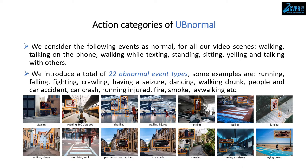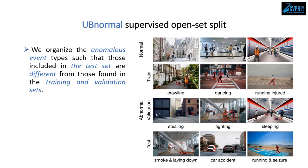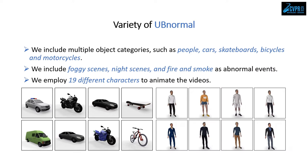As abnormal events, we introduce 22 event types such as running, pulling, fighting, or dancing. To obtain a supervised open-set dataset, we organize the anomalous event types such that those included in the test set are different from those found in the training and validation sets. On the right side, we can observe examples of abnormal actions from each split. To increase diversity, we include multiple object categories such as people, cars, and skateboards, illustrated on the left side. Unlike other datasets such as Avenue or Shanghai Tech, these objects can perform both normal and abnormal actions.